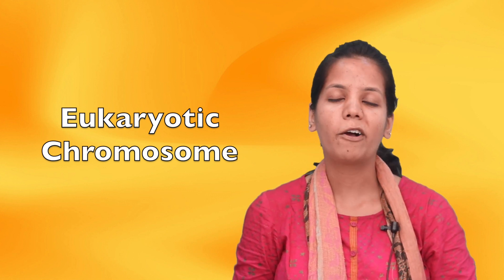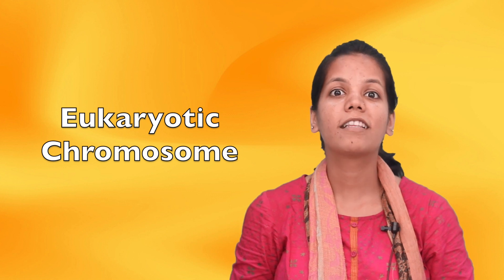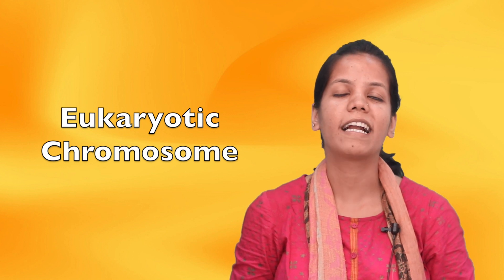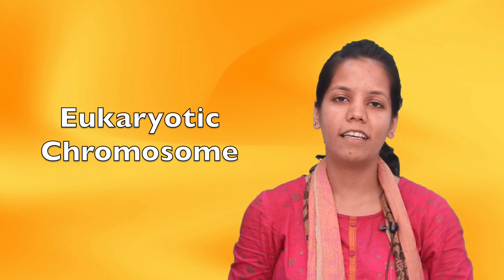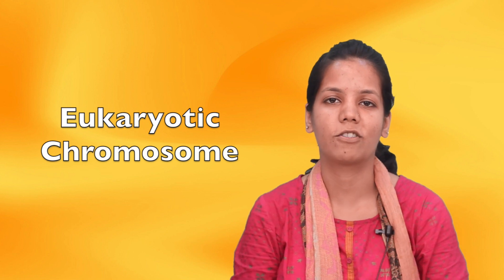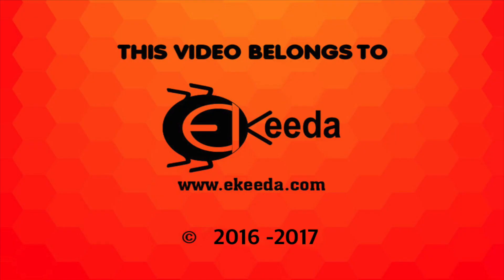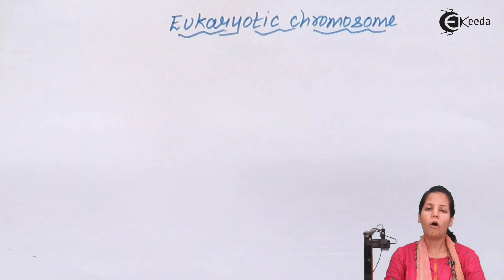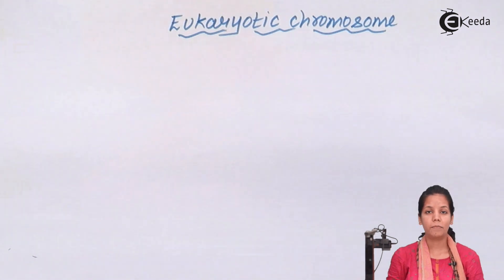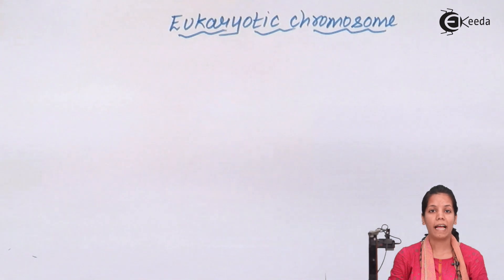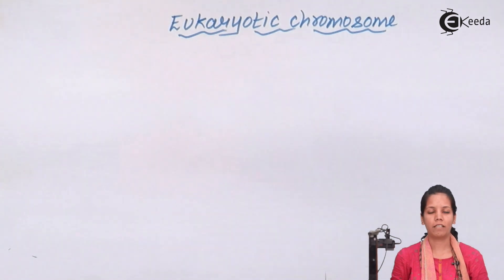Now if I talk about eukaryotic chromosomes — the chromosomes that are present inside you and me — let's study their structure today. The structure of eukaryotic chromosomes can be very visibly seen, especially during the metaphase phase of cell division.